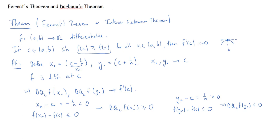The difference quotient for any sequence converging to C must converge to the same limit, f′(C). We've shown the difference quotient on x_n is always ≥ 0, and on y_n is always ≤ 0. The only way both can converge to the same value is if that value is zero itself. Therefore f′(C) = 0, and that proves the result.